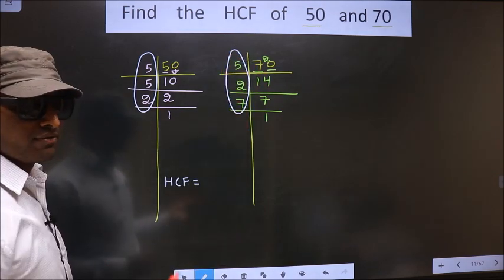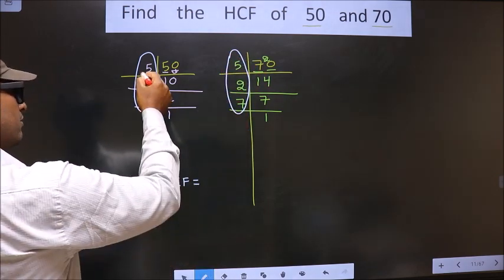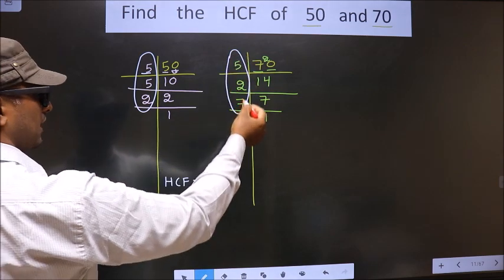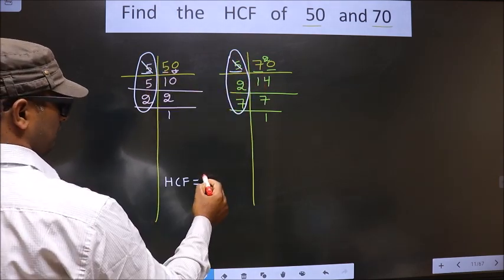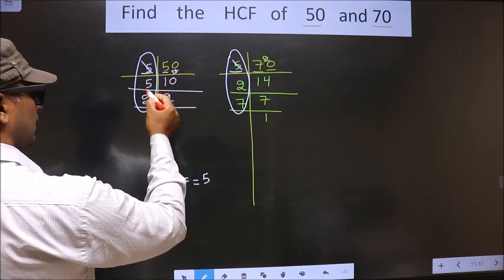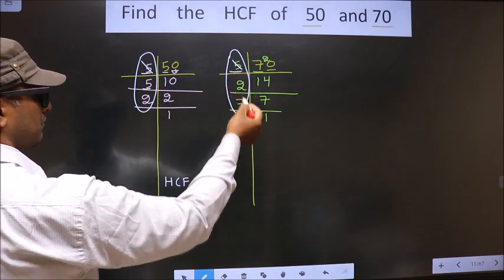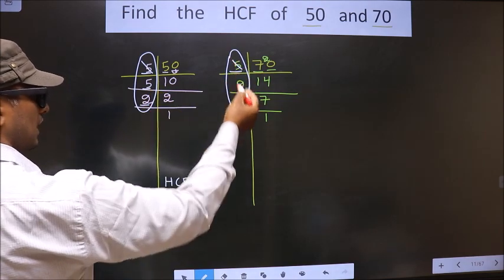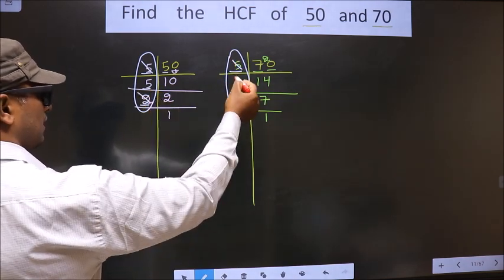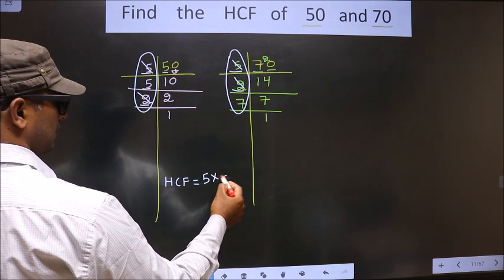So let us find. Starting with the number 5. Do we have 5 here? Yes. So you cut 5 and write here. Next number is 5. Do we have 5 here? No. Next number is 2. Do we have 2 here? Yes. So you cut 2 and write here.